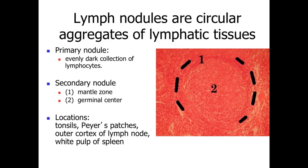Lymph nodules are found at a variety of locations within the body that are potentially susceptible to foreign materials getting in. We can find them in the tonsils, essentially as a ring around the entrance to the digestive system at the back of the oral cavity; in Peyer's patches, which are lymph nodules found within the small intestine; in the outer cortex of the lymph node as part of the filtration mechanism; and in the white pulp of the spleen.